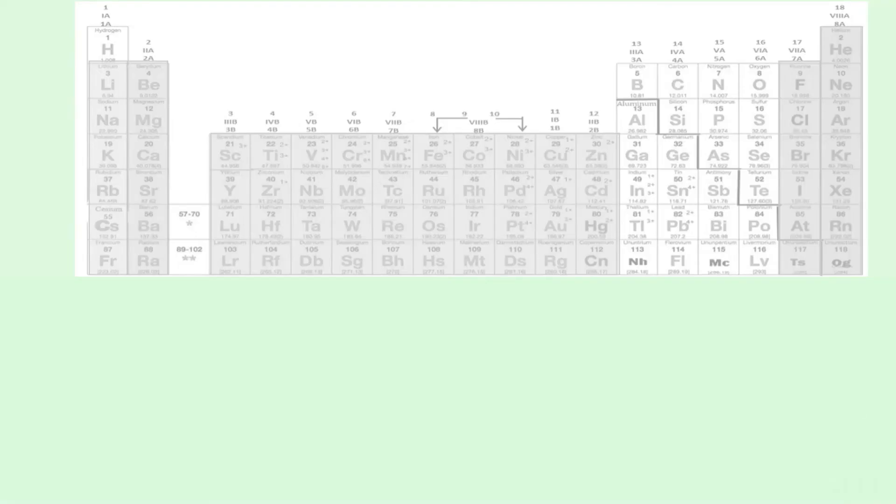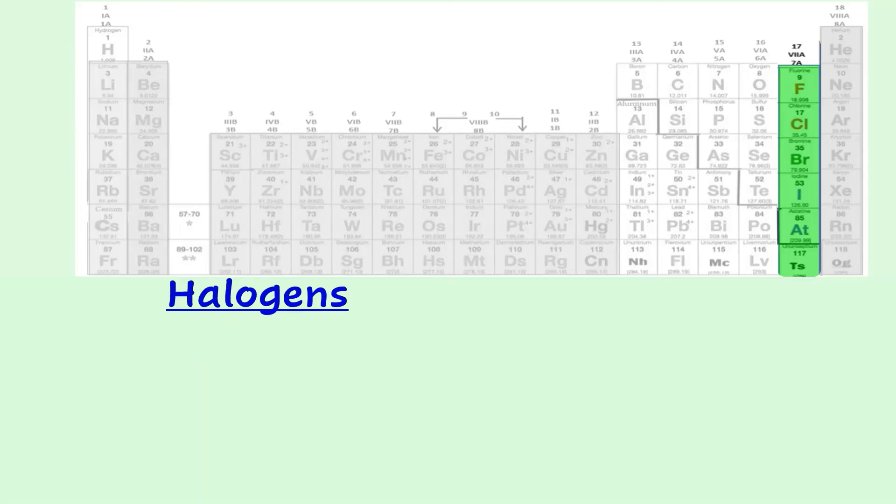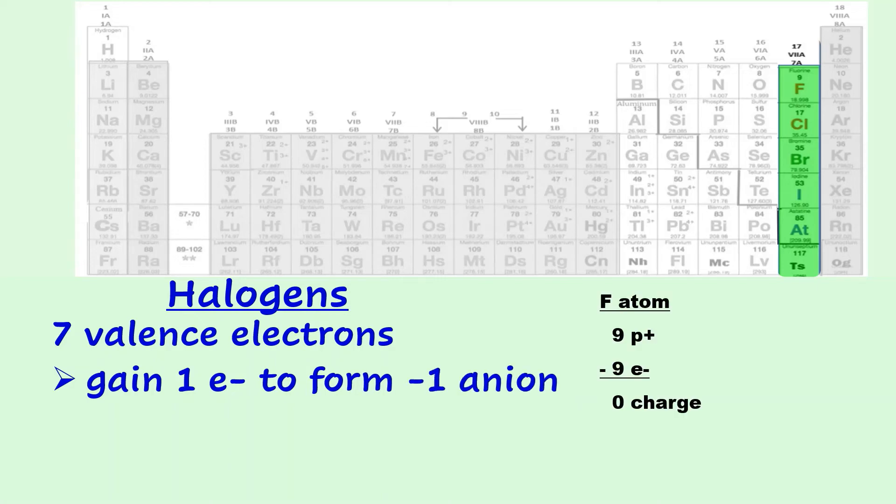One non-metal family would be the halogens in group 17. The atoms in this family have seven valence electrons, so they tend to gain one electron. Fluorine has nine protons and nine electrons in a neutral atom. Once the fluorine gains an electron, it will have an excess of one negative particle, creating an ion with an overall negative charge. Since the halogens only need one more electron to achieve a stable octet, it's a highly reactive group.